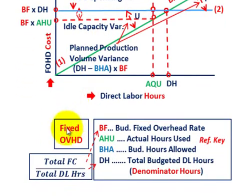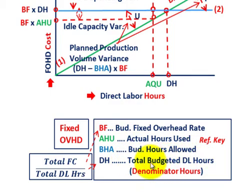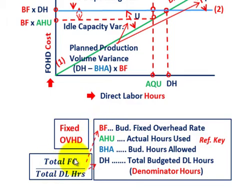For the reference key: BF in red is our budgeted fixed overhead rate. AHU in green is the actual hours used, based on direct labor hours for our fixed overhead rate. BHA is the budgeted hours allowed. DH is our total budgeted direct labor hours for the period — referred to as denominator hours because it's in the denominator when we figure out our rates. The budgeted fixed rate is your total fixed cost for the period divided by your total direct labor hours. There should also be an AF for the actual fixed overhead rate — total actual fixed overhead costs divided by total direct labor hours for the period.